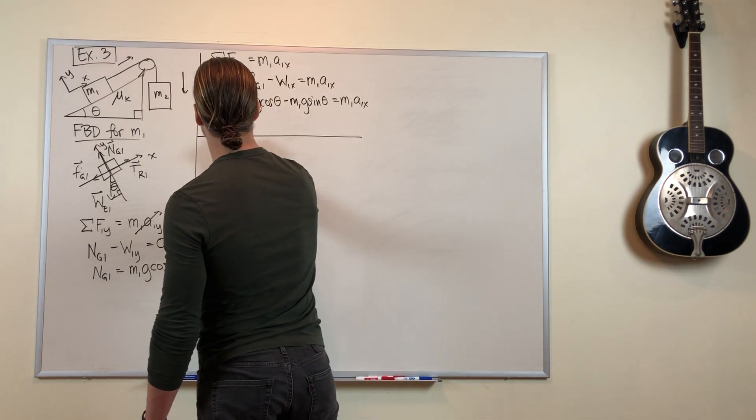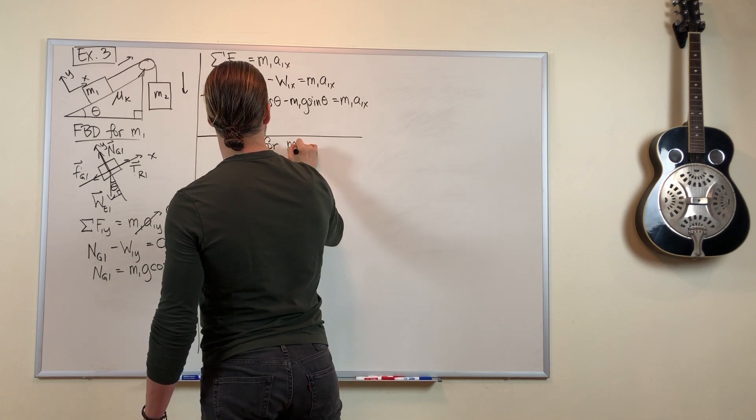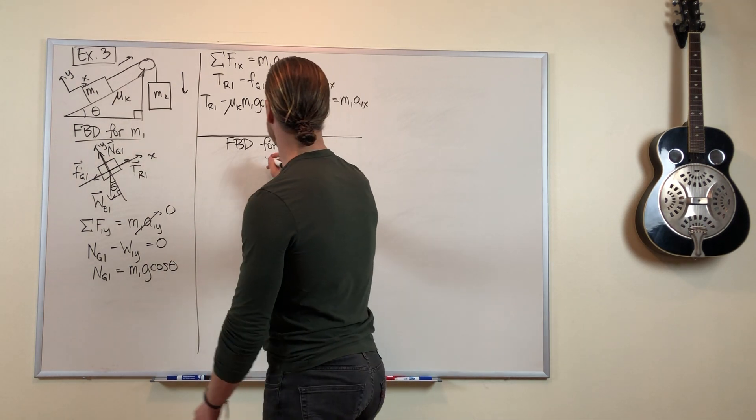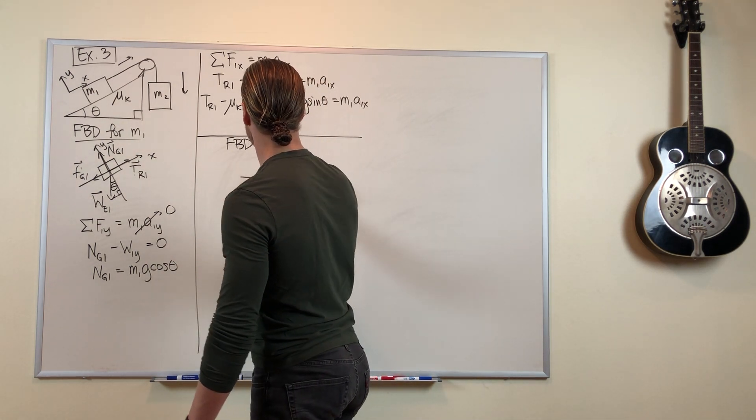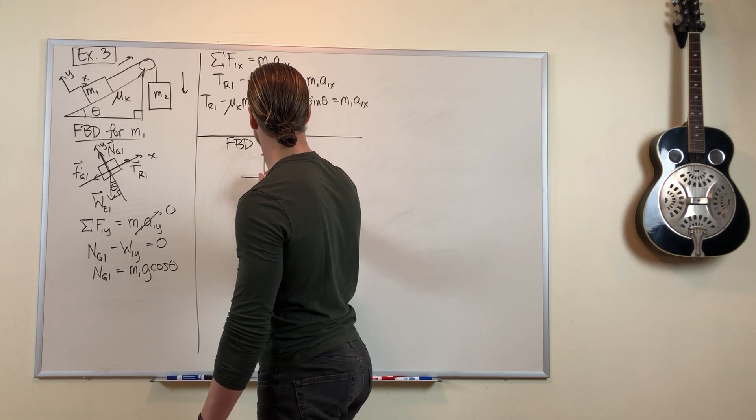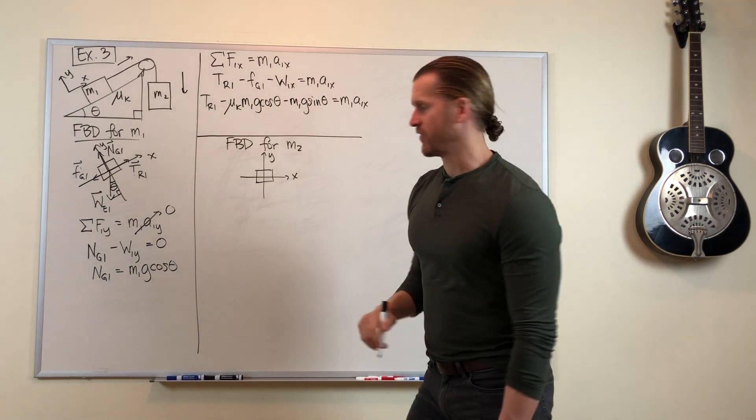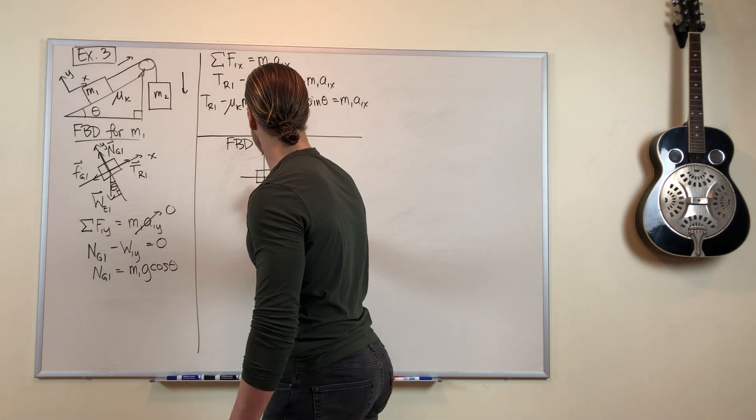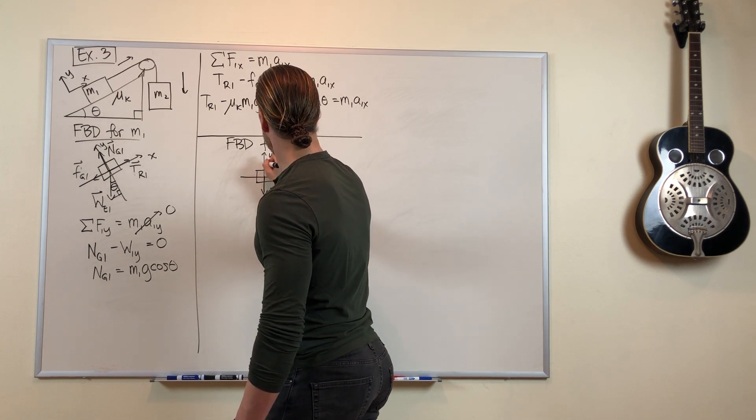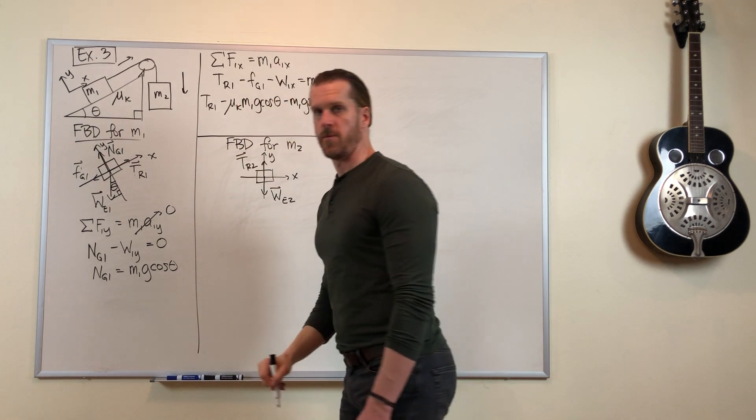Alright, for mass 2, here's a free body diagram. This one's a lot easier. Standard vertical, horizontal. There's mass 2. Fortunately, it only has two forces on it. There's gravity pulling down, and there's the tension force pulling up.